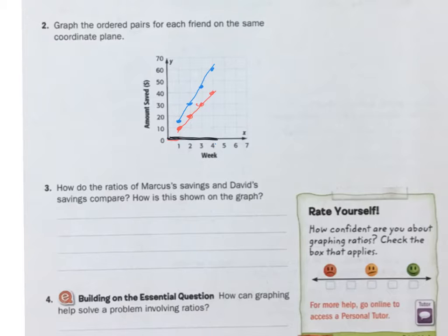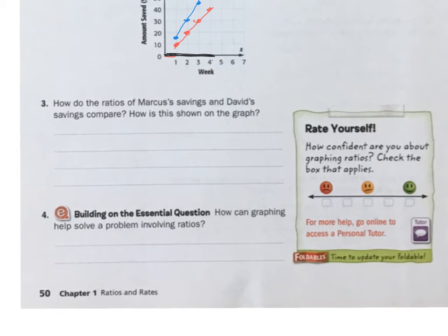Let's look at four here. How can graphing help solve a problem involving ratios? One way I would say it could help is it shows which ratio is greater by seeing which line is steeper or more even. And you can look at it, you can visually see it. It will help you to solve problems.